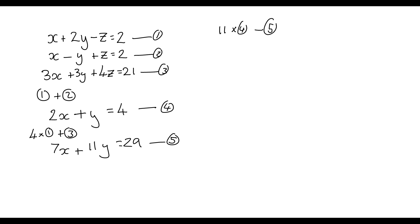Well 11 lots of 2X is 22X. 22X take away 7X is 15X. So we've got 11 lots of Y take away 11Y is nothing. And then we have 11 lots of 4 to give 44 take away 29 is 15. So X equals 1.